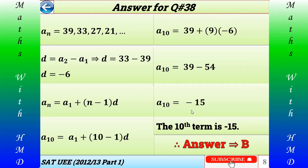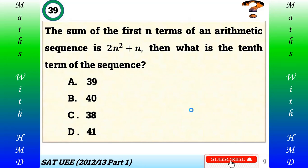Question number 39: The sum of the first n terms of an arithmetic sequence is 2n² + n. What is the 10th term of the sequence? A) 39, B) 40, C) 38, D) 41. As usual, please try by yourself and check your answer. Thank you very much.